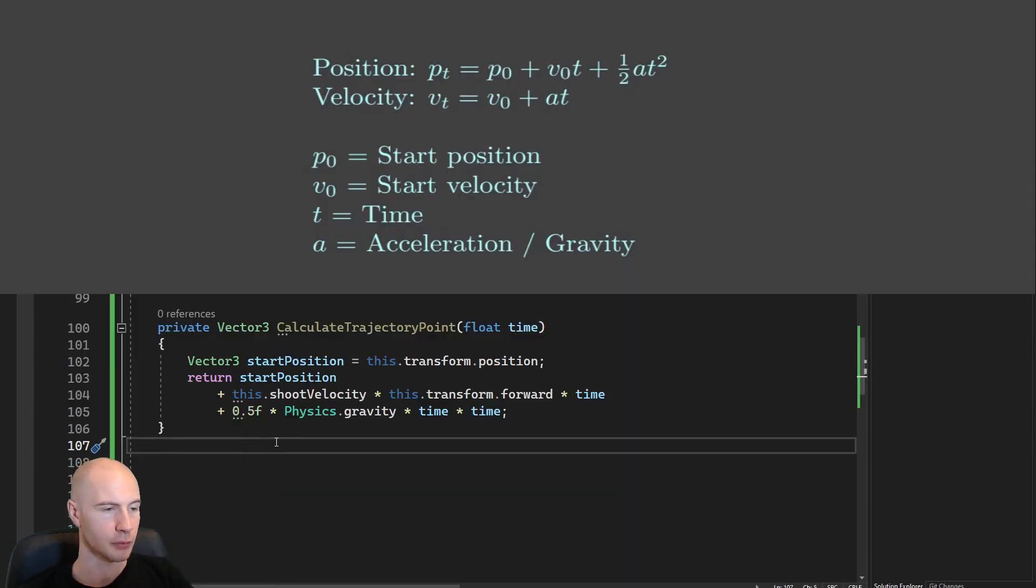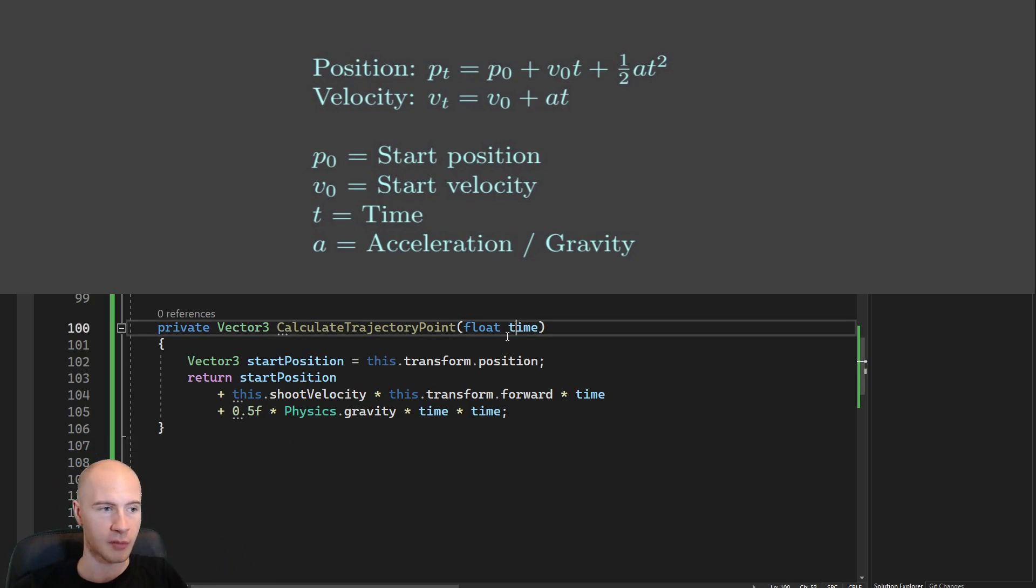You probably know the formula above from school. And we can simply put it into a method that takes time as a parameter and returns the position at the trajectory at that point in time. And there is really not a lot to say to this. It is very clean. It is very simple. It is very fast. The problem is it doesn't account for drag.